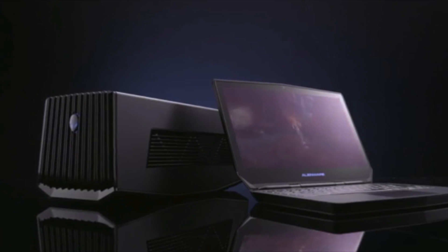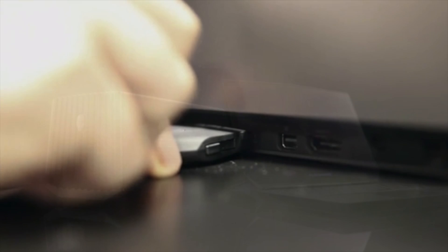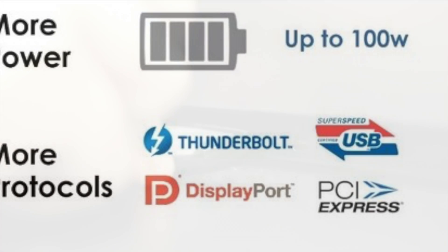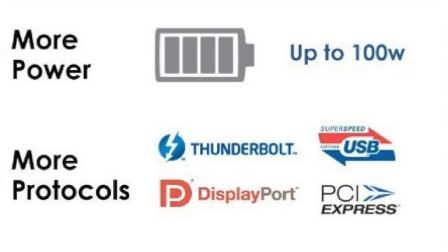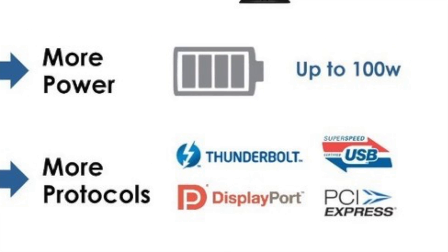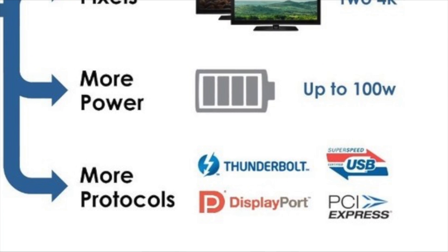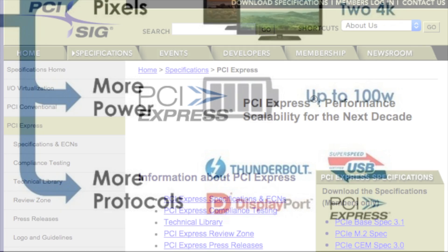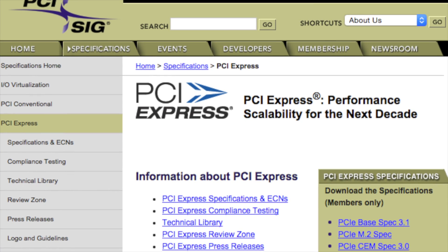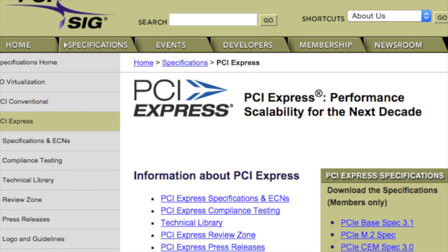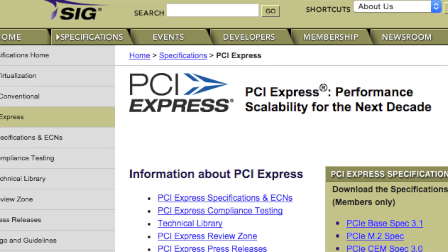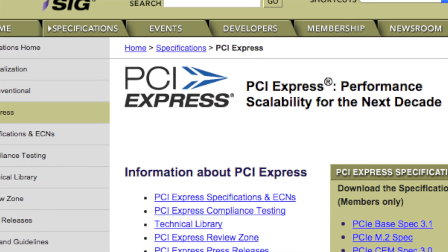Bandwidth is good and all, but that's not enough to power external graphics cards — so you might be asking yourself how does this work? There's one simple solution: Thunderbolt 3 also supports more protocols — not only USB, Thunderbolt, and DisplayPort, but also PCI Express. In this case it actually offers four lanes of PCI Express Gen 3, which allows this functionality.